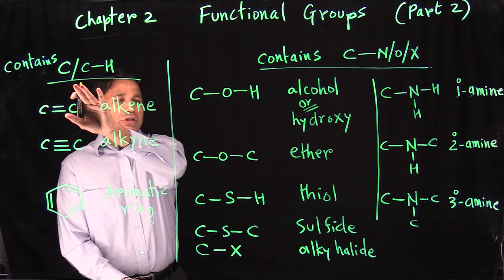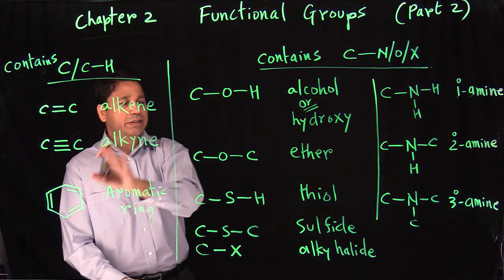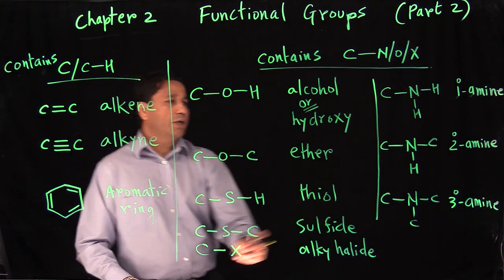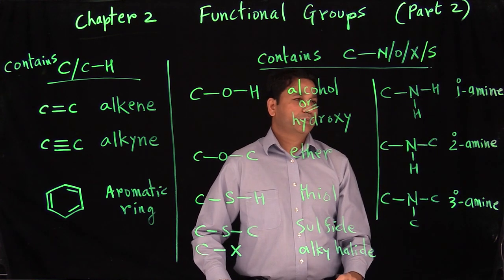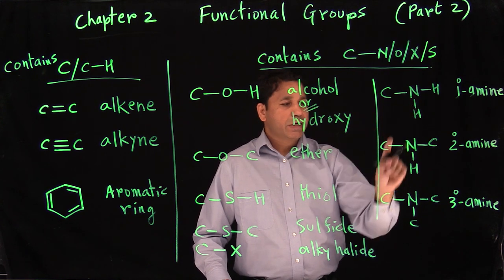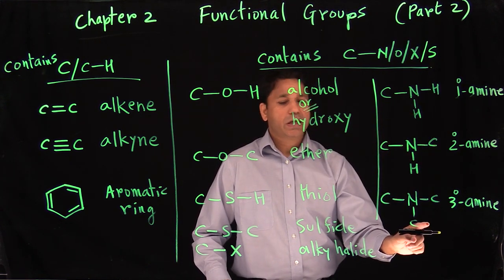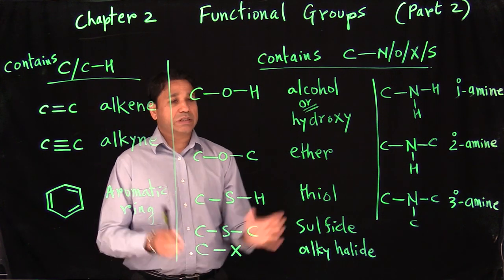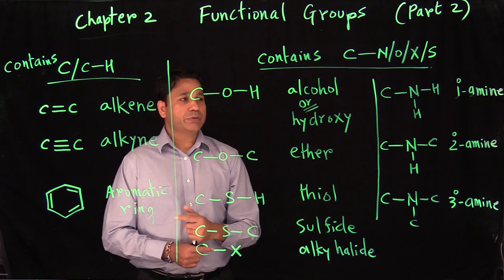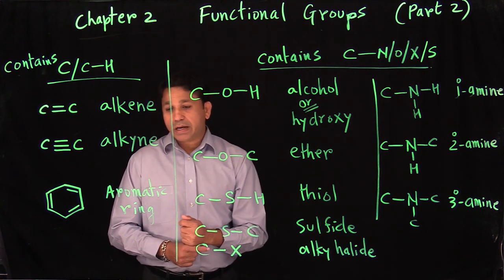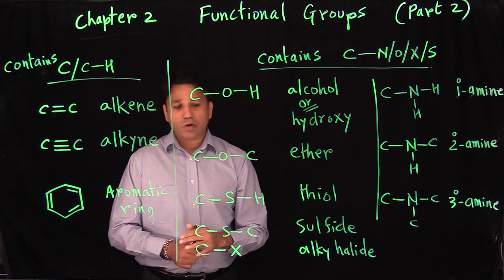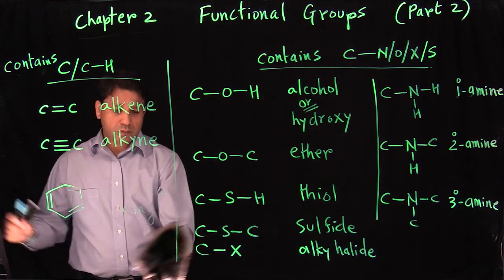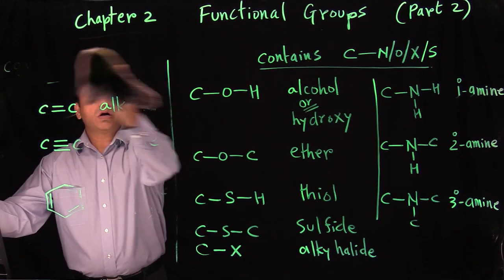So we have two charts now. Chart one has just carbon-carbon bonds and carbon-hydrogen bonds. Chart two has carbon bonded with oxygen, sulfur, halogen, or nitrogen. Carbon bonded with nitrogen can be primary, secondary, or tertiary. This is something you have to memorize — I prepared a chart with all the functional groups on one page that I'll post along with this video.